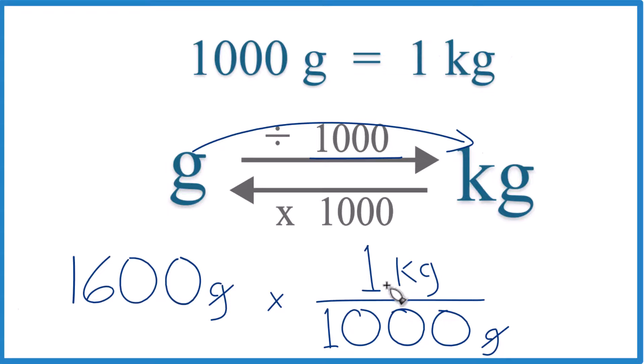1,600 times 1 kilogram, that's 1,600 kilograms, which we divide by 1,000. We get 1.6 kilograms, just like before.